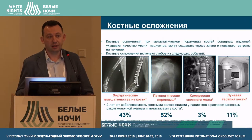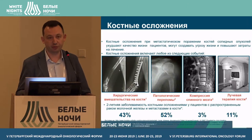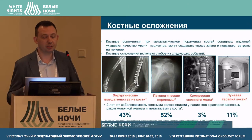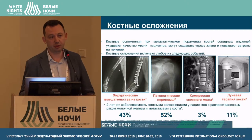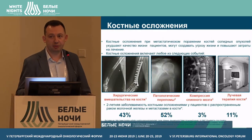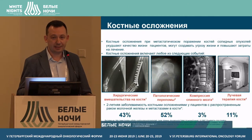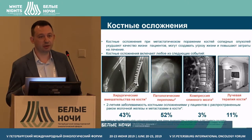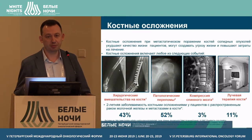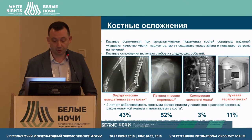What do we include in bone complications? First, surgical interventions on bones because of fractures or in case of compression of spinal cord, and then radiation therapy, rendered in two types: smaller or bigger fractions. Radiation therapy is more effective.